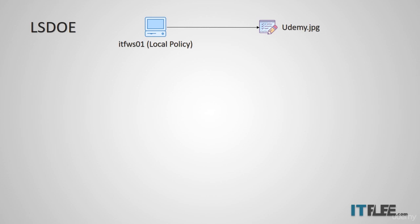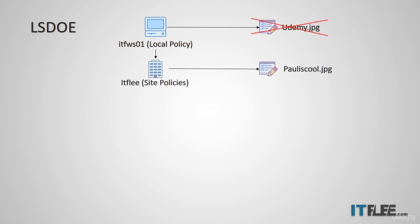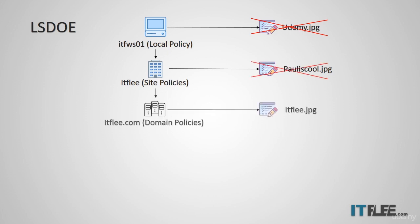In this first diagram, we have ITF Workstation 01. It has a local policy configured to use the background Udemy.jpg. In this scenario, the local wins because nothing else is configured. But if another administrator adds a site policy configuring pauliscool.jpg, the site — the second item in the order of precedence — will take effect over Udemy.jpg. If someone then assigns a domain policy configuring itflea.jpg as the background, that GPO will overwrite Udemy.jpg and pauliscool.jpg and take precedence.